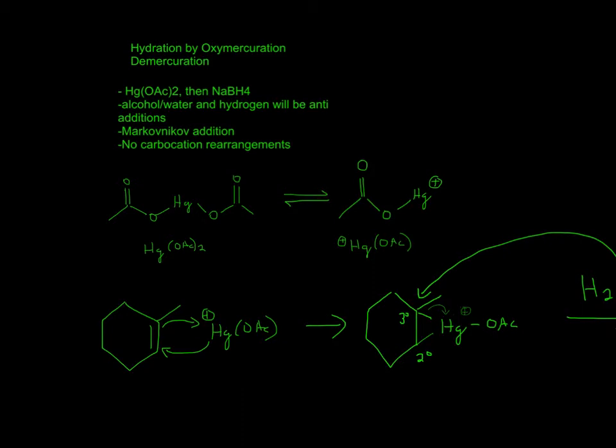For hydration by oxymercuration-demercuration, you'll need Hg(OAc)2, and then you'll also need NaBH4. You can use an alcohol or water, and then hydrogen will be an anti-addition.